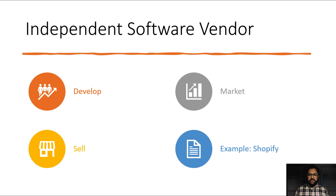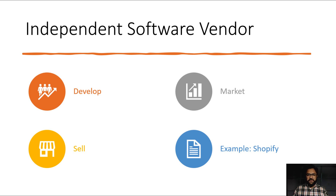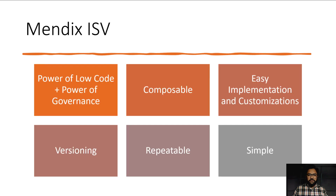ISV is an Independent Software Vendor — it is an individual or organization that develops, markets, and sells software solutions that can further be customized and extended by the buyer to meet their needs. Shopify is a great example of this: if someone wants to start an e-commerce company, they can go to Shopify, select a plan, build or purchase a theme for a customized look and feel, and add different connectors or integrations, and then they're ready to launch. The buyer does not have to worry about how Shopify fetches products from the database or how the add-to-cart functionality works. Mendix ISV is something similar.